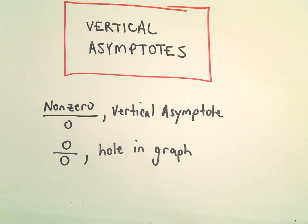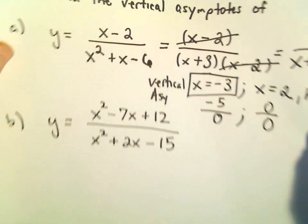Alright, so one more example here of finding vertical asymptotes. Again, what we're looking for, we're trying to find those values that make the numerator not zero, but the denominator equal to zero.